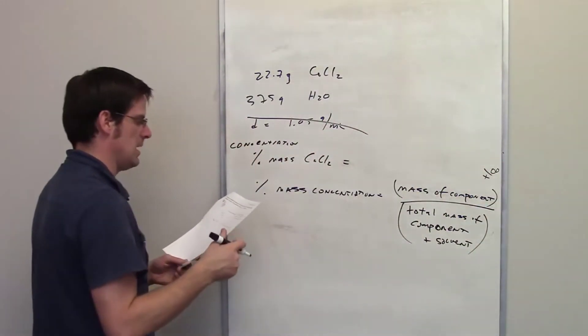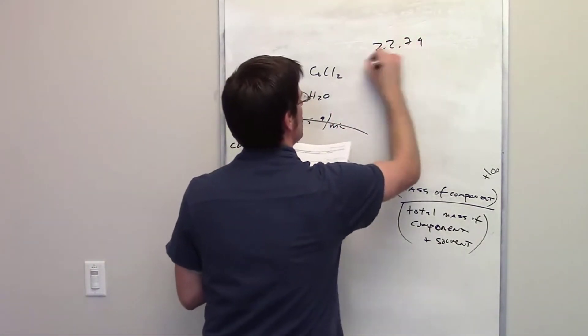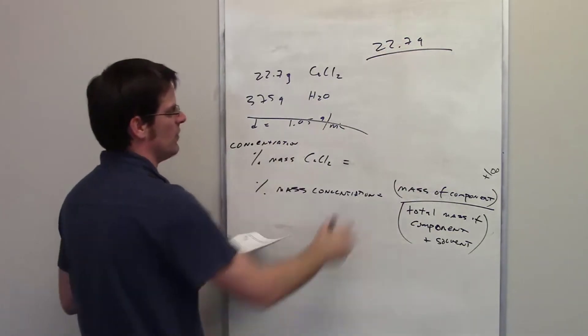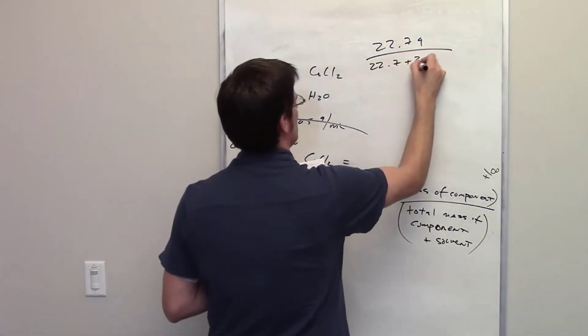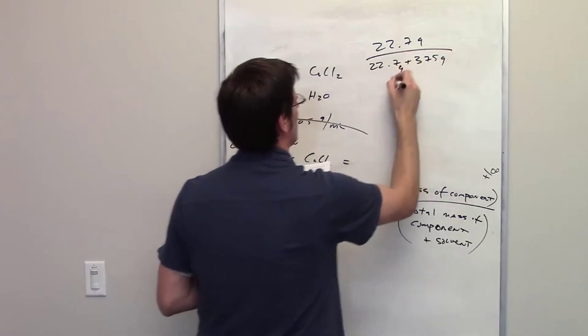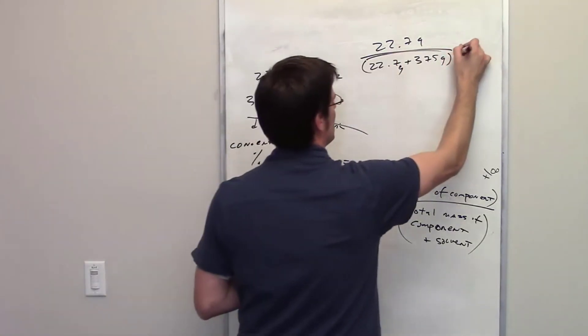So how much component do we have? It tells us 22.7 grams of calcium chloride. Then we divide that by the total mass of everything, which is 22.7 plus 375. I've got that many grams of calcium chloride, that many grams of water. And then I just take that and times it by 100.